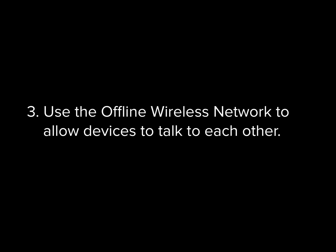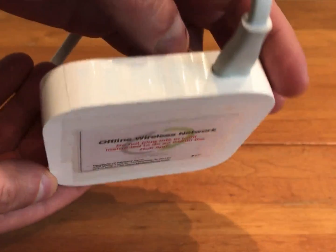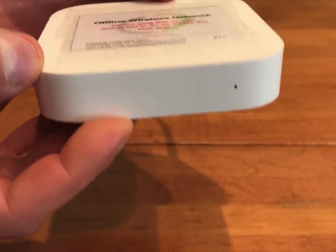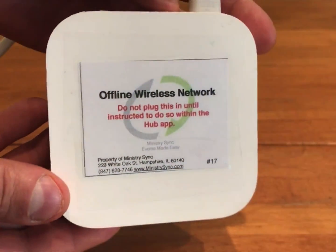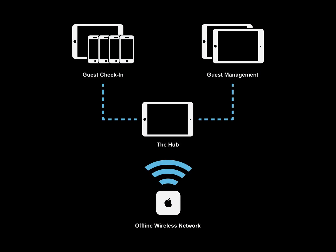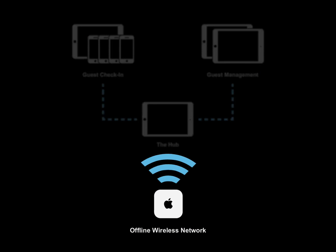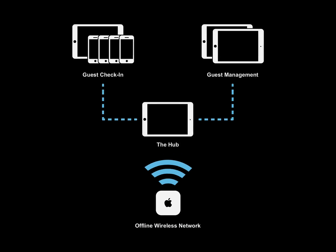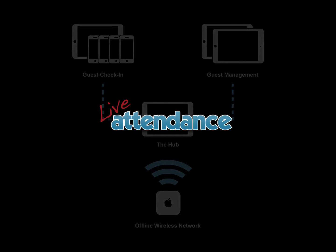And finally, the offline wireless network is simply just a Wi-Fi router without internet that connects all the devices together and keeps everything in sync. All of these components work together to create Live Attendance.